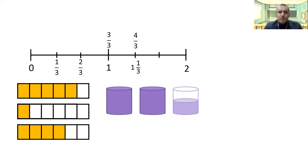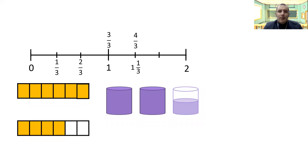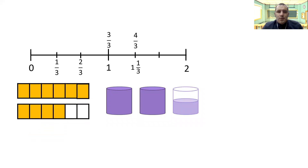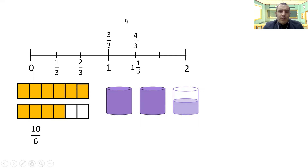Looking over at our bar model, I can move one across there and it gives me a nice, neat, full bar. So I've got ten sixths — that's my improper fraction. To write it as a mixed number, I've got one, two, three, four, five, six there — so I've got a whole there, and I've got four sixths underneath. So I've got one and four sixths.